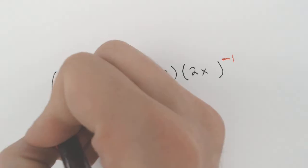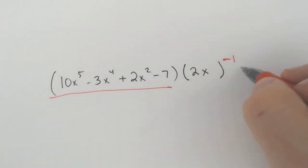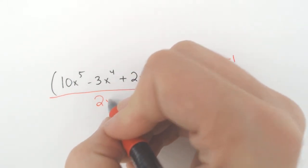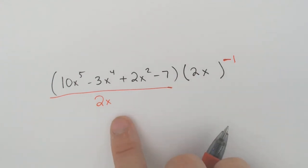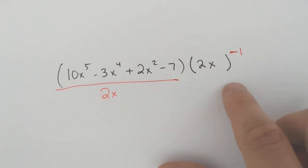Anything that is raised to the negative 1 power is essentially divided by or put onto the bottom of the fraction. So this is the exact same thing as if I just had it all over 2x. So this is the exact same thing as our previous problem. It's just written a slightly different way.